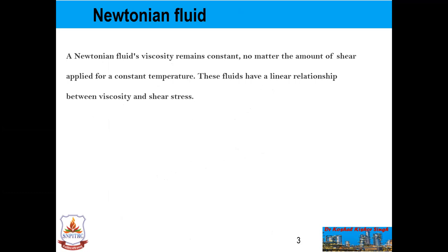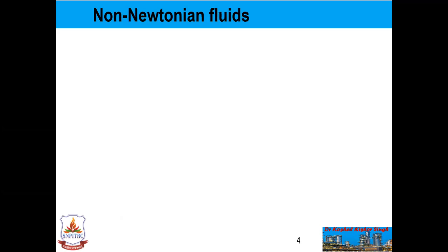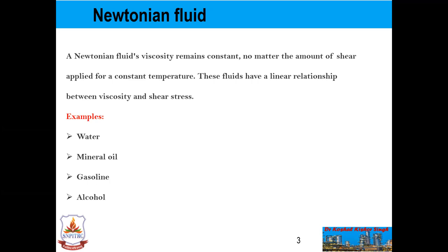What is the Newtonian fluid? In Newtonian fluids, viscosity remains constant no matter the amount of shear applied, for a constant temperature. These fluids have a linear relationship between viscosity and shear stress, as we have seen in that figure. For example, water, mineral oil, gasoline, and alcohol are all Newtonian fluids because they all obey Newton's law.